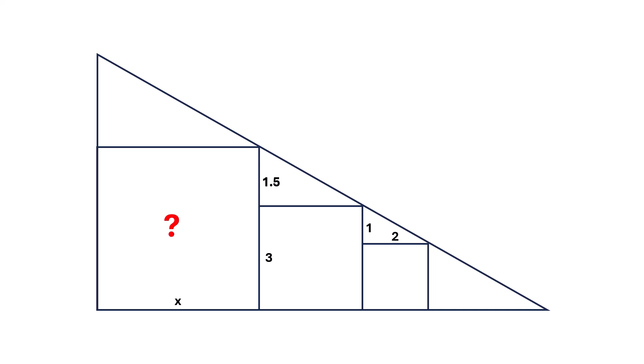So, the total side length x is 3 plus 1.5, which equals 4.5. Substituting this back, we now know the side length of the largest square is 4.5.